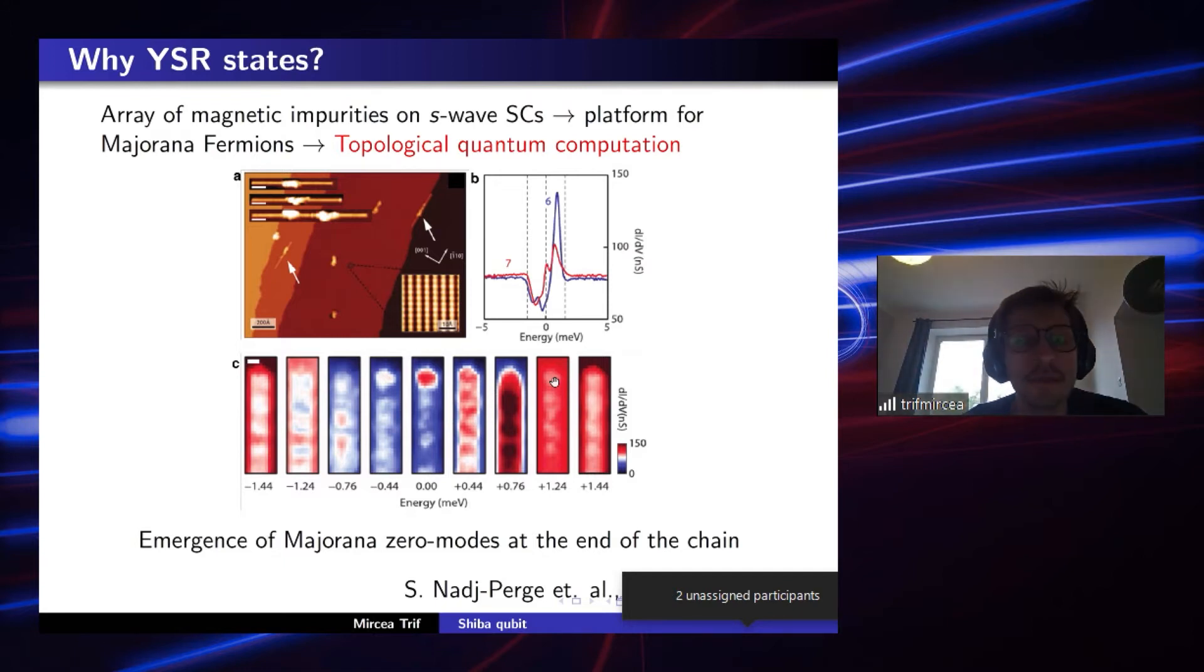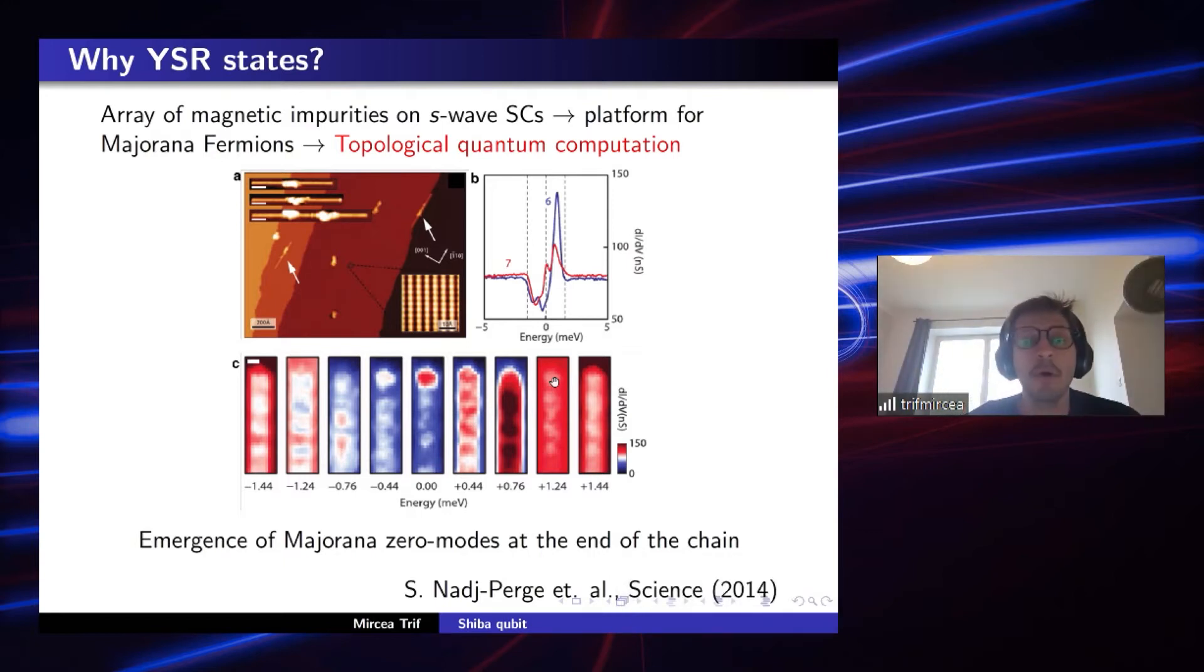Roshino in-gap states, which when combined together, for example, in an array of magnetic impurities, can give rise to Majorana zero modes. Or at least it is consistent with the emergence of Majorana zero modes at the end of the chain.